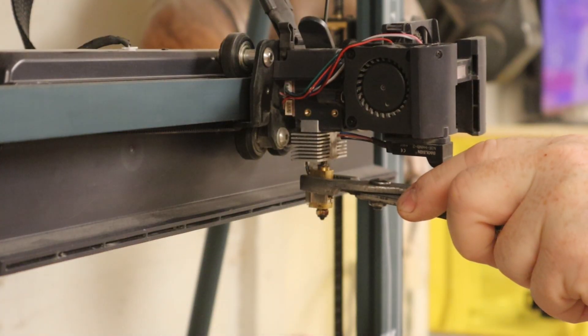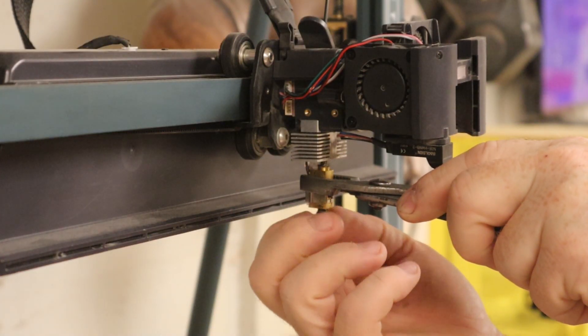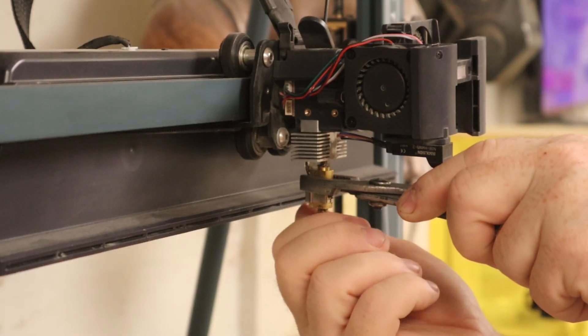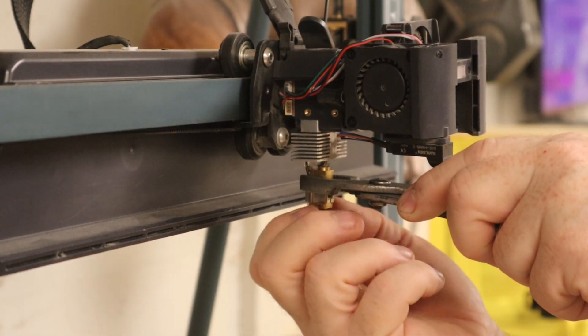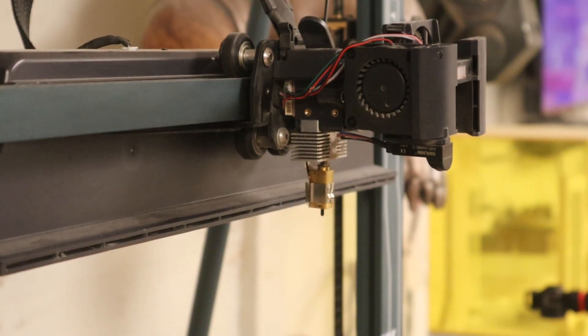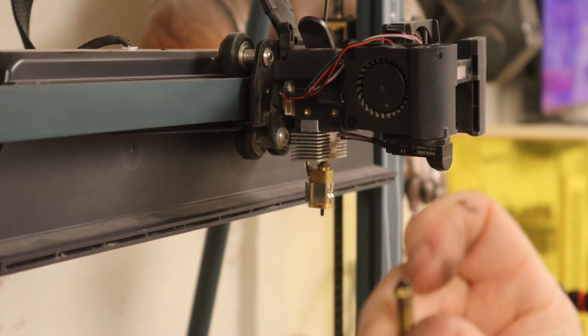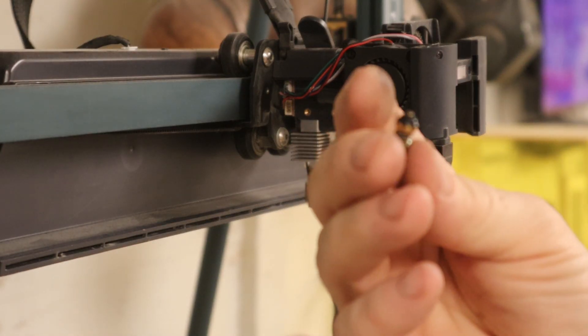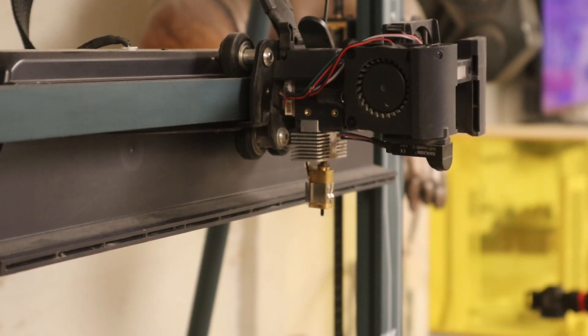All right, once it's broke loose, then you can usually just unscrew it by hand. And there is our old eight millimeter nozzle. Pretty gummed up and needed some thorough cleaning anyways.